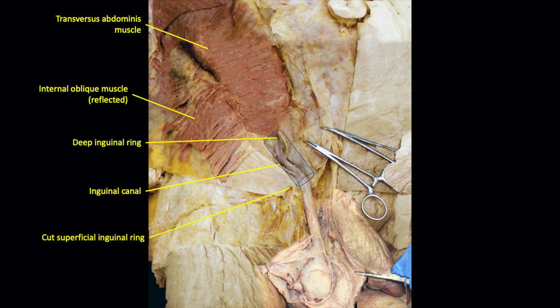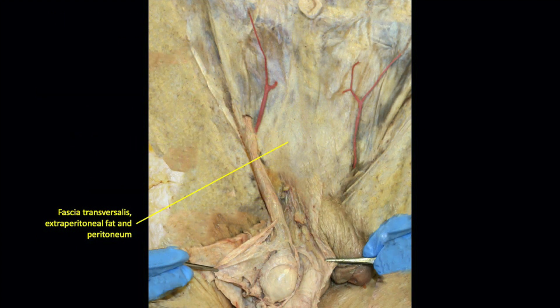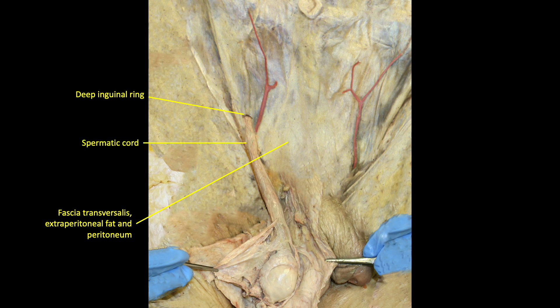A clear cylinder has been placed in the approximate location of the inguinal canal to demonstrate the path taken by the spermatic cord from the deep inguinal ring to exit via the superficial inguinal ring and enter the scrotum. Removal of the transversus abdominis reveals the fascia transversalis, extraperitoneal fat, and the peritoneal layers. We also note the deep inguinal ring, a defect in the fascia transversalis allowing the spermatic cord to enter the peritoneal cavity — and through which a piece of intestine may exit as a hernia.